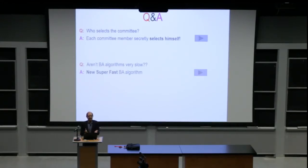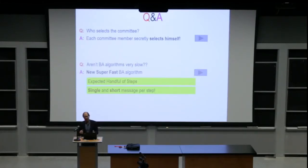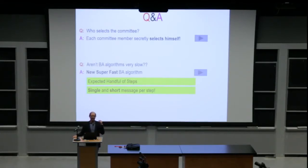Now they run Byzantine agreement — but didn't we say Byzantine agreement is very slow? Not the one we are running, because it is new and super fast. The number of steps is very few, and in each step you send a single, very short message. So this is a really very fast agreement.